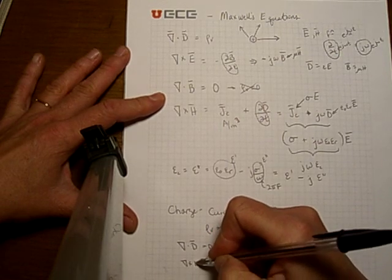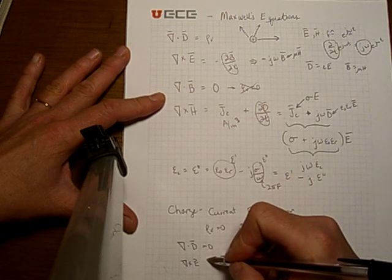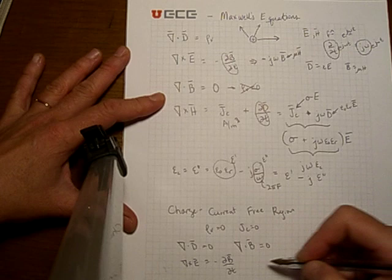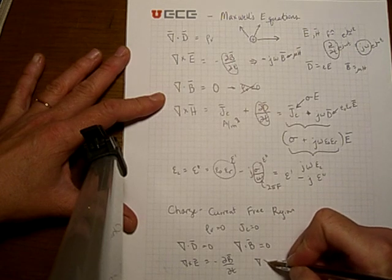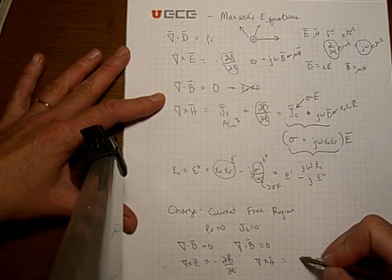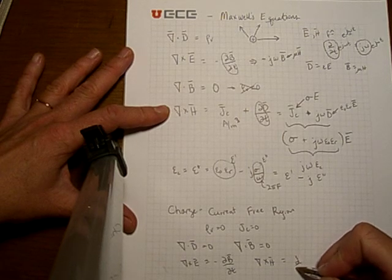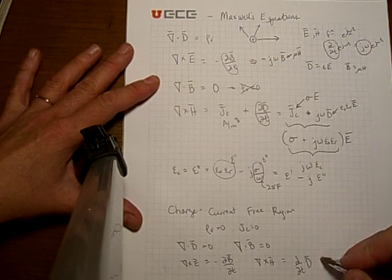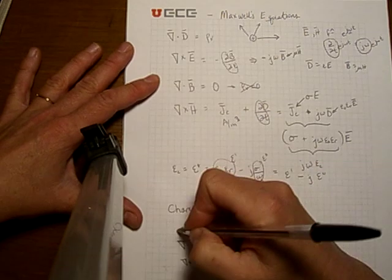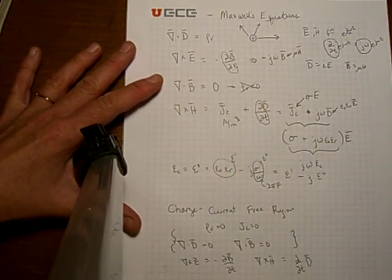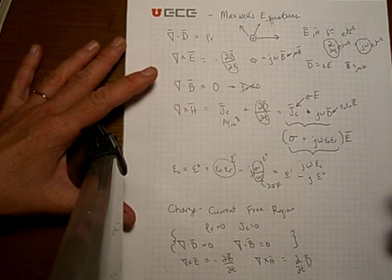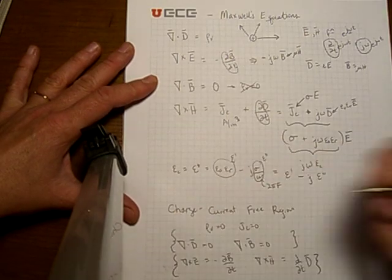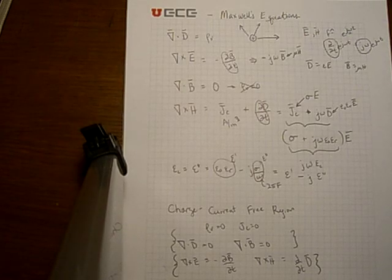The curl, or the cross product of the electric field, is still minus dB by dt. And we also have del cross H is equal to time derivative of the electric flux density. Now, these two equations are normally not very interesting for us to solve. They're interesting equations, but they're not used in our solutions. These two equations right here are what we're going to use in the solution of all of our waves.